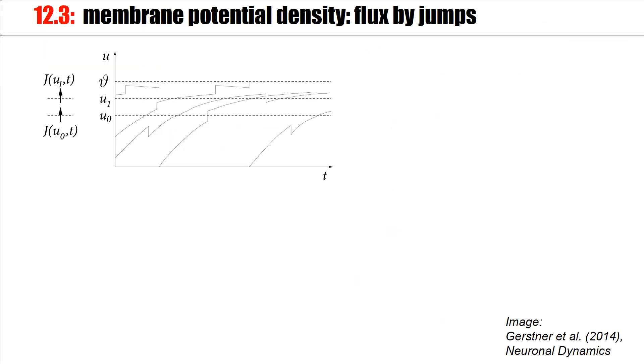Here we have a couple of membrane potential trajectories. They are driven by external current. Occasionally, there might be a jump caused by, here, an inhibitory spike arrival, and then we continue. And now the question is, if we take one of these reference values, an arbitrary potential U0, what is the flux through this reference value U0?